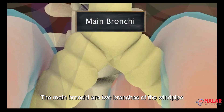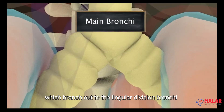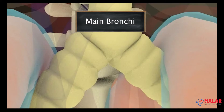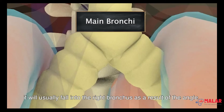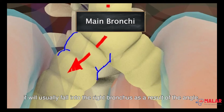The main bronchi are two branches of the windpipe, which branch out to the lingular division bronchi. When a person chokes on a foreign object, it will usually fall into the right bronchus as a result of the angle.